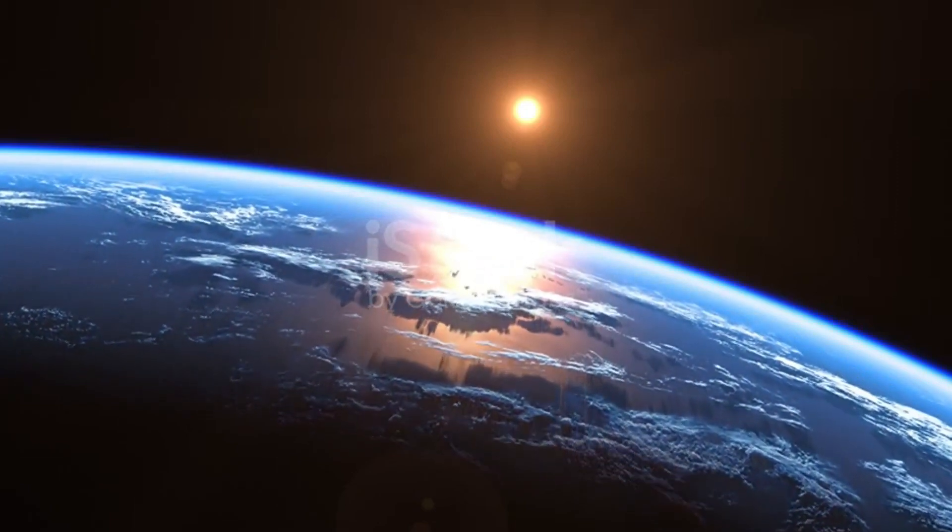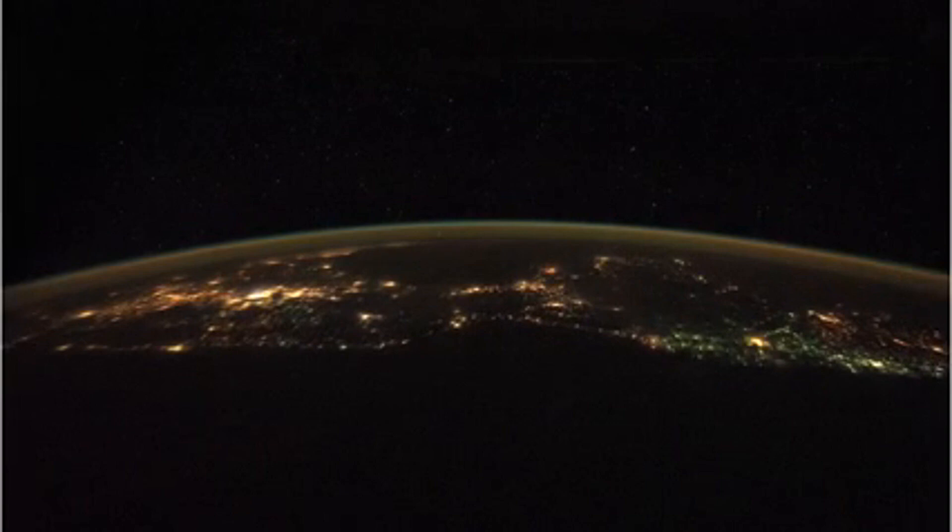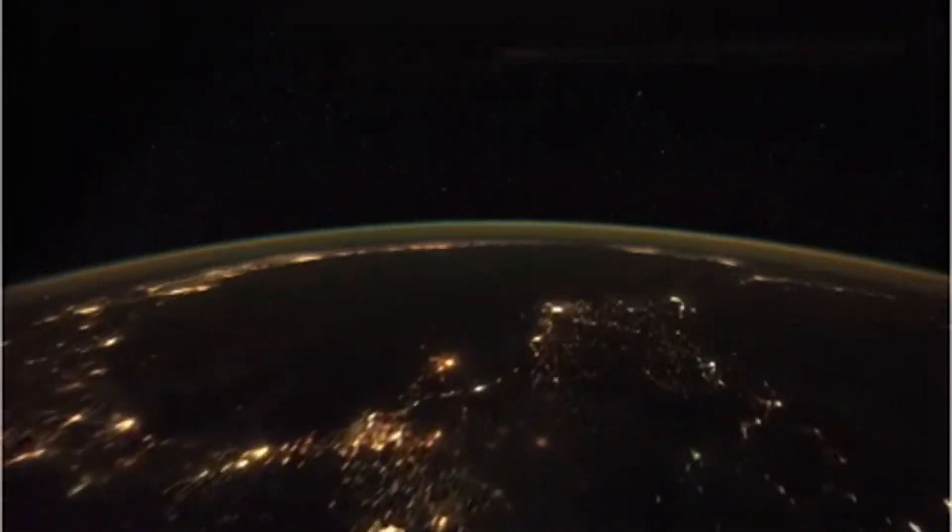So, does the dimming of Betelgeuse mean it's about to explode? Because Betelgeuse is so close to our planet, when it explodes and turns into a supernova, it will be bright enough to be visible during the daytime for weeks.